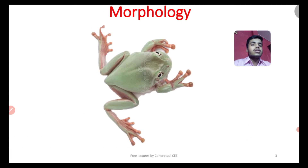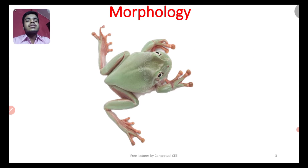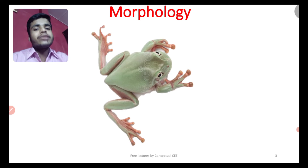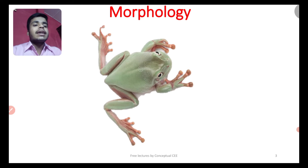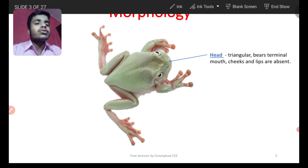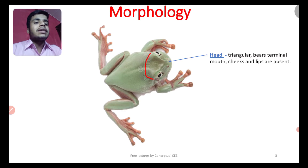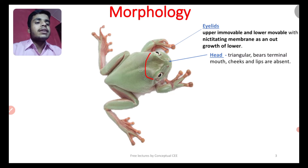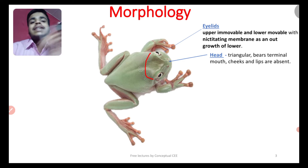Now let's look at the morphology of frog — what can we observe in its structure? First, the head area: the head is triangular and the mouth is terminal — located at the front end. In the head region we can observe the eyes, which have eyelids.